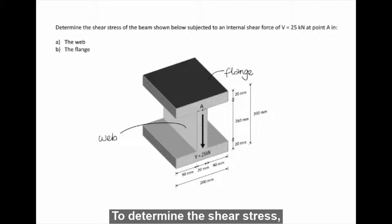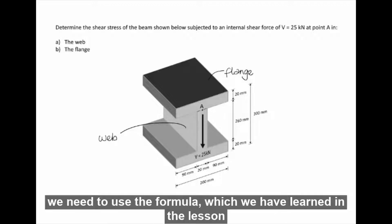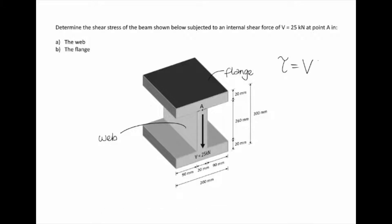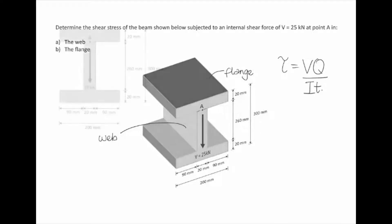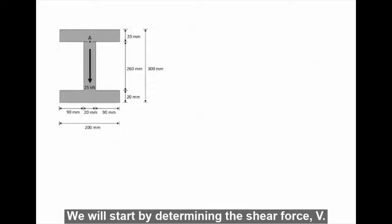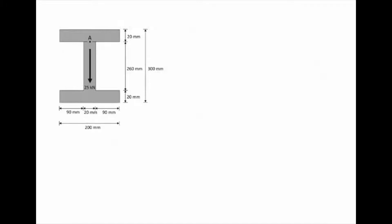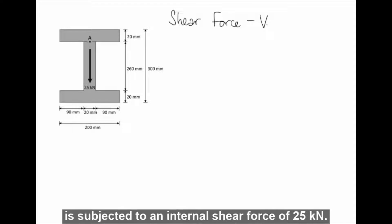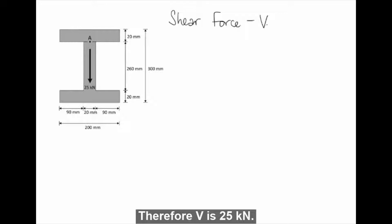To determine the shear stress, we will use the formula from the lesson: tau equals VQ over It. We will start by determining the shear force V. As we recall from the example, the beam cross-section is subjected to an internal shear force of 25 kN, therefore V is 25 kN.